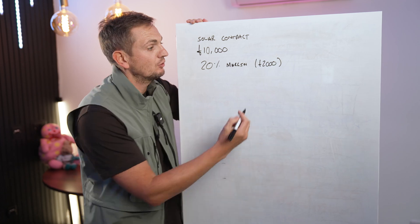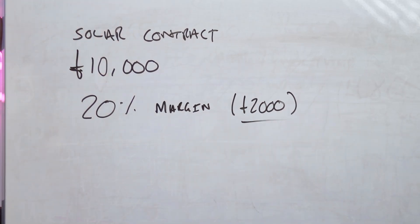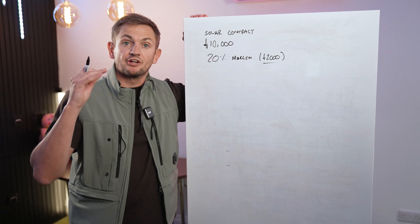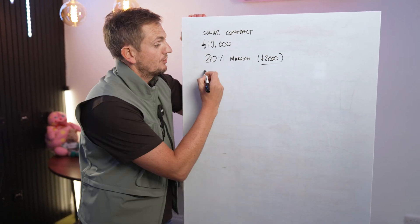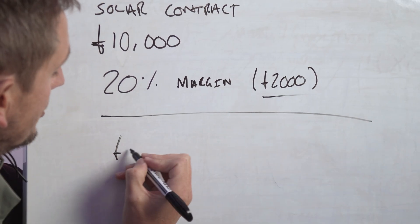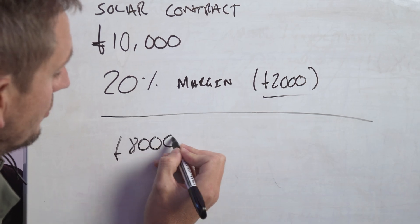The consumer's signed up, so has the installer. Typically, in the UK, service industry businesses, installation businesses are gonna be working on about a 20% margin. We're gonna come back to margins later on. Theoretically, in this deal, we have £2,000 worth of margin for the installer.